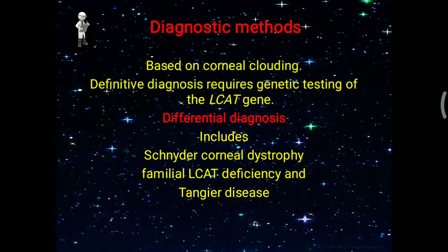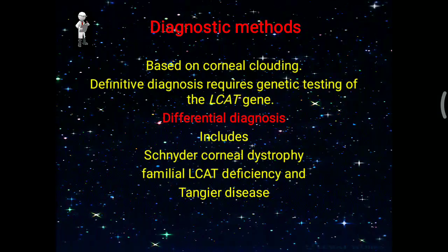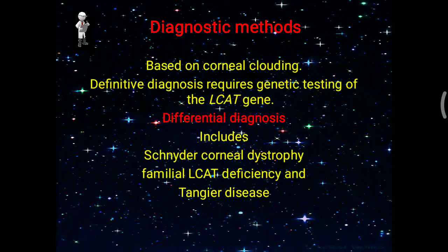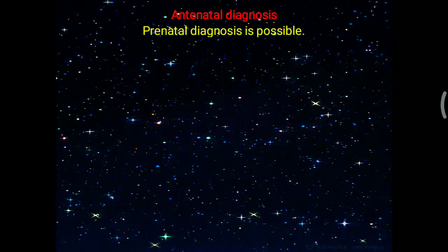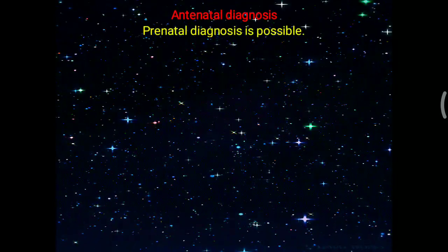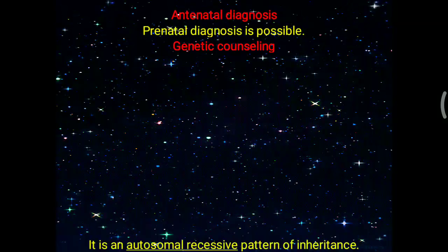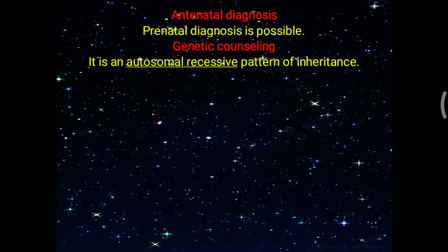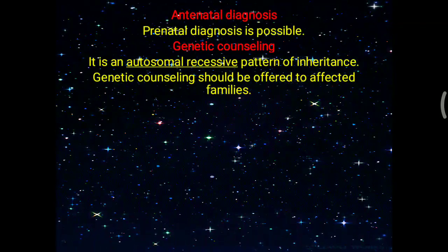Another differential is Tangier disease, where the ABCA1 protein is affected, leading to decreased HDL formation and deposition of cholesterol in peripheral tissue. Prenatal diagnosis is also possible. Fish-Eye disease follows an autosomal recessive inheritance pattern, so genetic counseling should be offered to affected families.